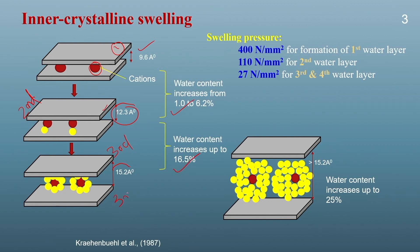In the fourth stage, up to four layers of water molecules are adsorbed by the cation, increasing the separation to higher than 15.2 angstrom — generally up to 20 angstrom — and the water content increases up to 25%. This is the fourth stage of inner crystalline swelling, at which point inner crystalline swelling ceases. Due to inner crystalline swelling, the interlayer distance increases up to 10 angstrom and water content increases from 1% to 25%.